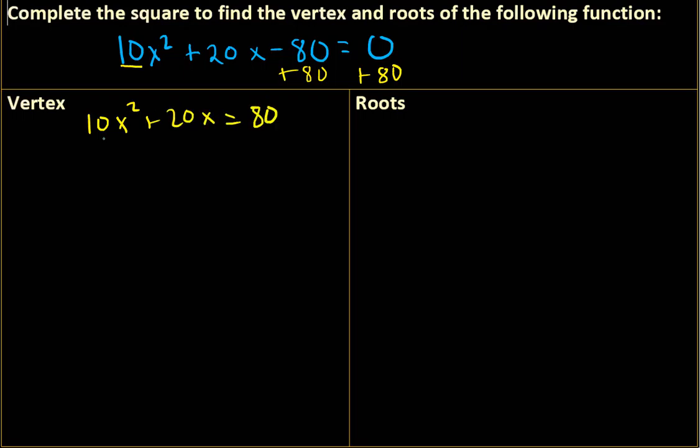Now we're going to complete the square. Actually, we need to get rid of this 10, so we're going to factor out that 10. So I have 10 over here on the outside, because that's my GCF, and then x squared plus 2x equals 80.